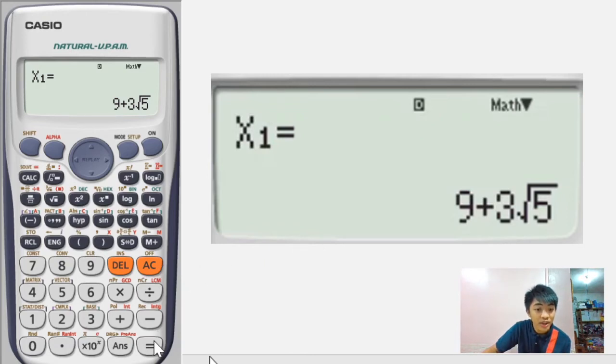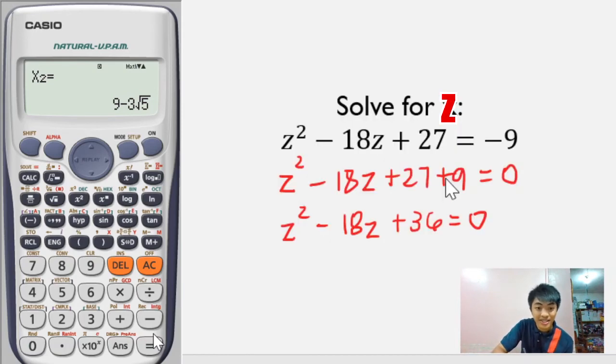For us to do that, go to mode. Piliin kung anong number si eqn or equation. Hanapin si equation, ipindot kung ano yung number niya. In this case, it's number 5.